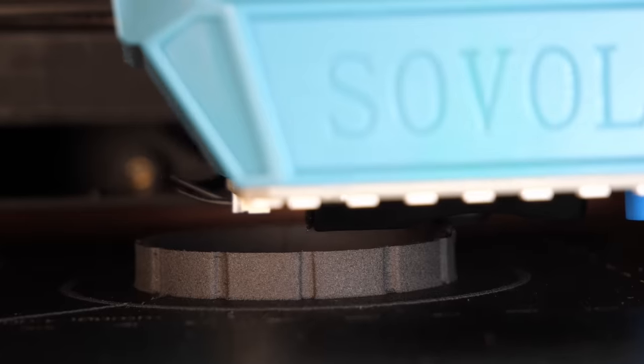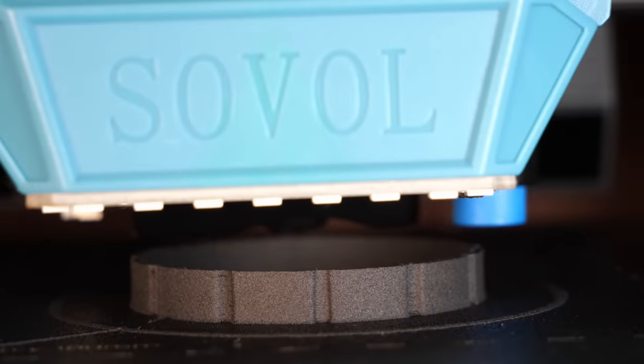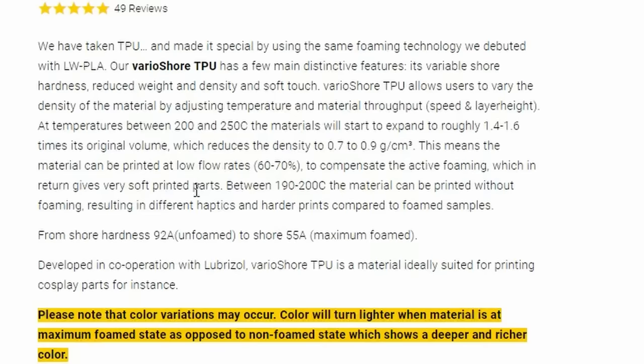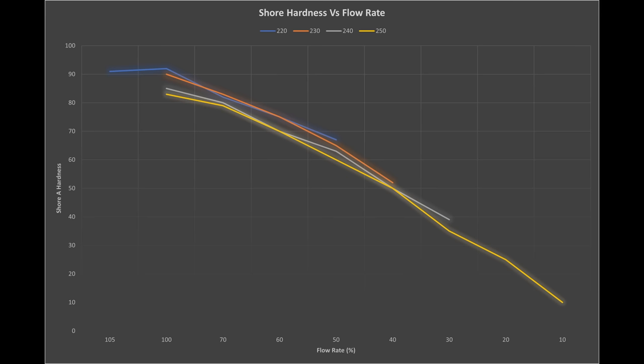The fun thing is, Colourfab specs claim that the filament has an operating range of between 100% and 60% flow rate, which translates to a shore hardness of, erm, well the claim is a bit vague. I think the 55a maximum foam that they state is probably theoretical and not related to the 100-60% flow rate. At least that's how it looks in my graph. I don't know how they've worked that out, but to achieve that you would need to exceed their operating range a bit. But you can do that, it does work.